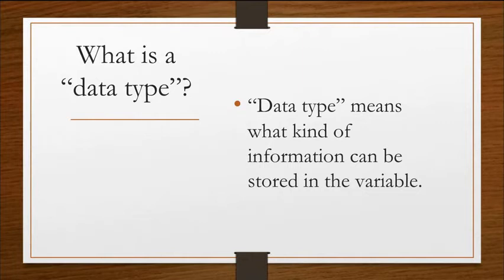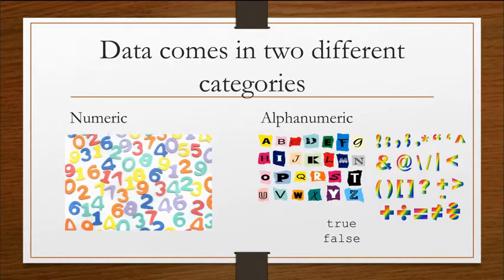Data type means what kind of information can be stored in a variable, and Java offers several options. You can kind of think of data as numeric data and all other data. So numeric data is going to be numbers, and then all other data, there's a variety of types.